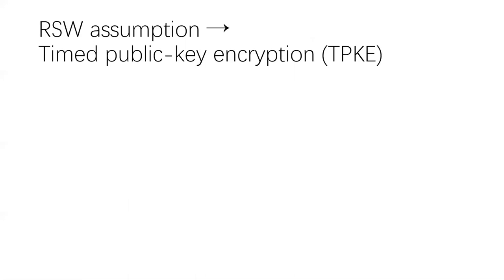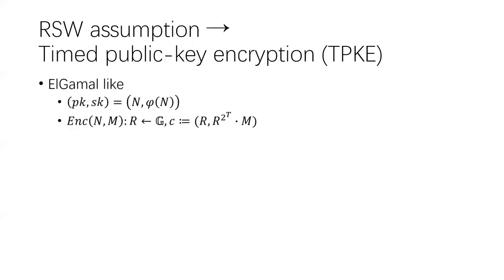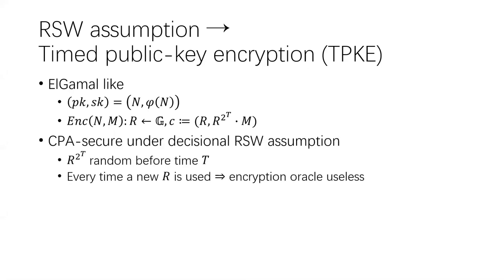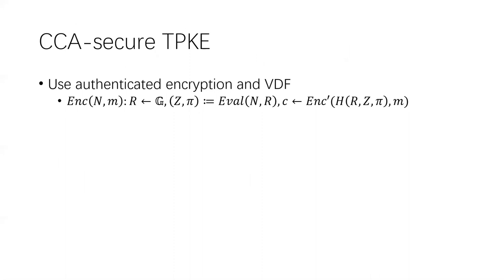With this assumption, we can construct a timed encryption scheme similar to ElGamal. The public key is N and the secret key is the factorization of N. To encrypt, you choose a random group element G and multiply a random group element to the power of 2^T with a message. The scheme is CPA secure under the decisional RSW assumption. However, it is not CCA secure because it is malleable. One possible approach to achieve CCA security is to use an authenticated encryption scheme and a verifiable delay function, but the problem is it requires a random oracle.